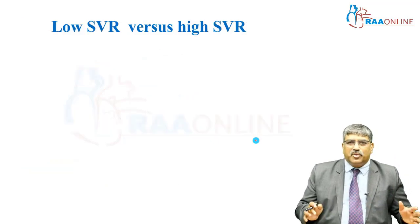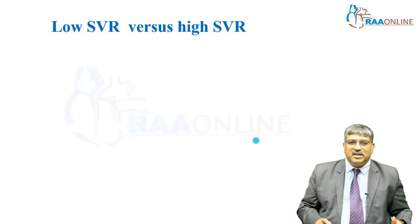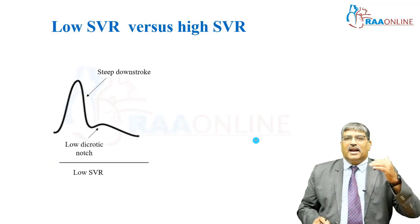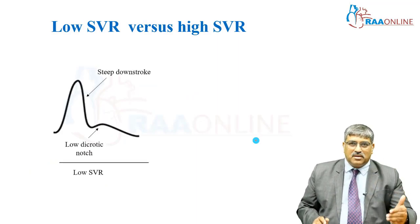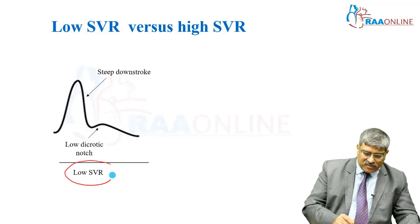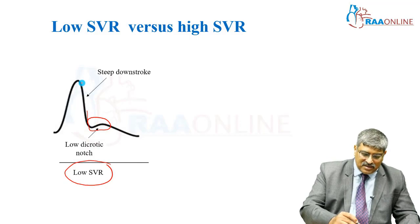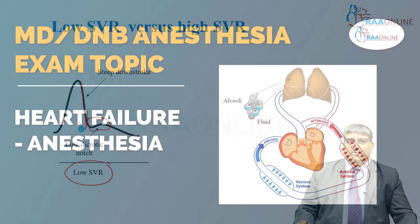Another way to put it: low SVR is vasodilated and high SVR is vasoconstricted. Here, with low SVR, your dicrotic notch is pushed down and there is a steep downstroke.